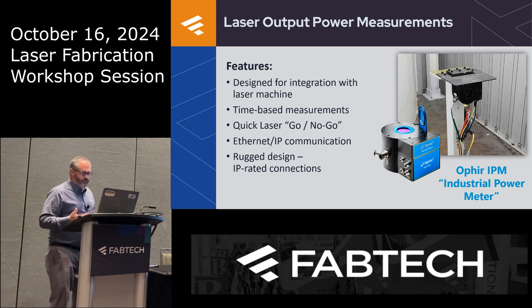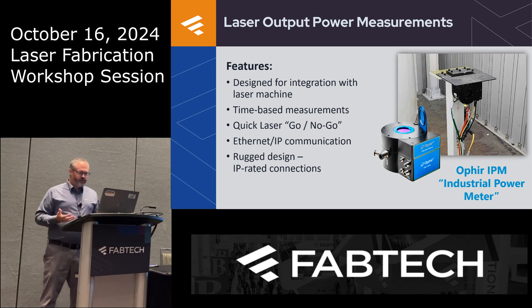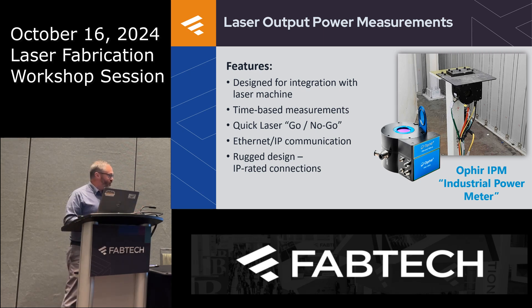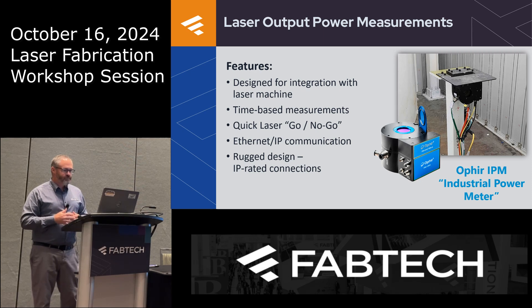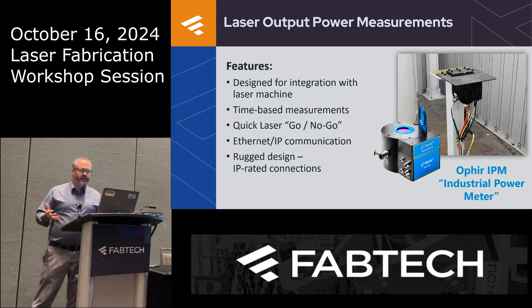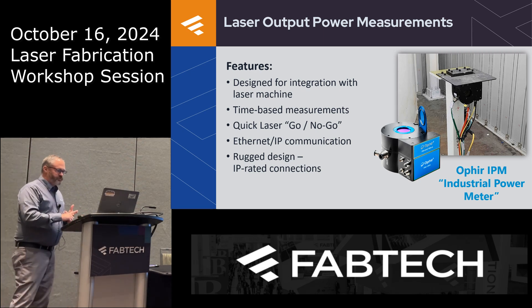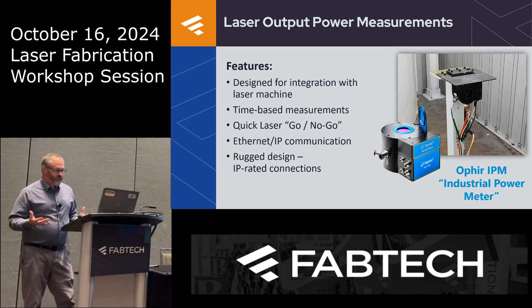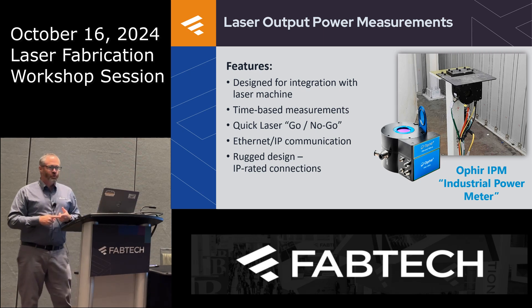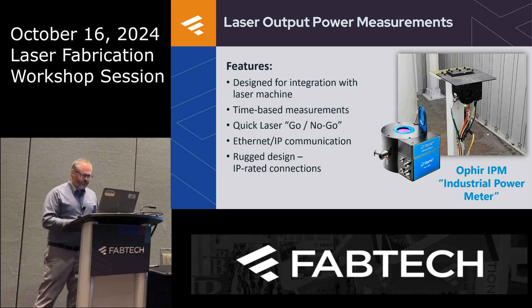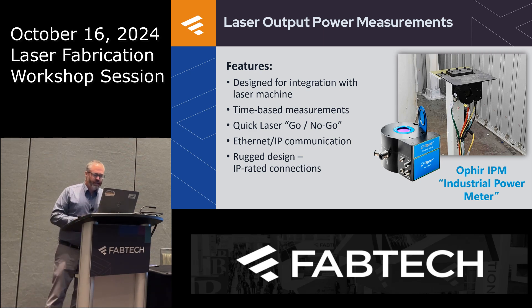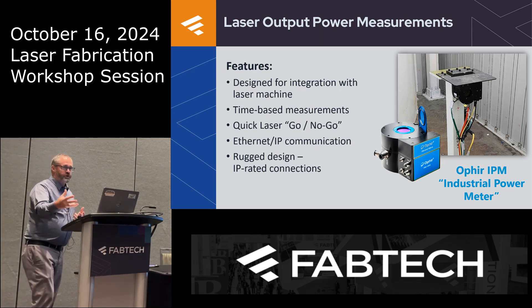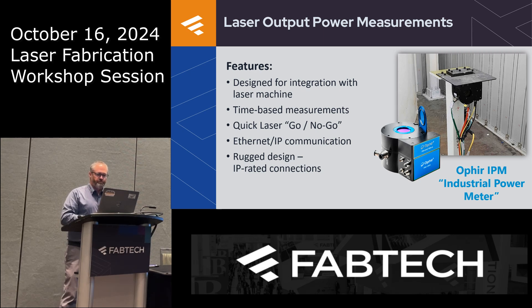Here is one method of measuring laser power. We partnered with automotive OEMs to help develop this Ophir product called the IPM — the Industrial Power Meter — shown installed in an automotive plant. It's designed for integration into a laser machine. It provides time-based measurement and is a water-cooled device that can take up to 11 kilowatts of laser power for several seconds. It also has a quick laser go/no-go function so you can fire the laser briefly to confirm it's present and continue processing.